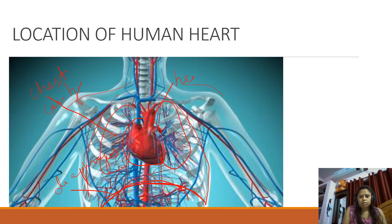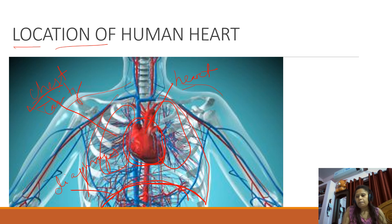In between these two lungs there is a muscular organ — that is your heart. The position of the human heart is in the chest cavity, in between the two lungs. It is exactly at the center of the chest cavity, and it is slightly tilted towards the left. Generally, if you ask anyone the location of the human heart, they will say it is on the left side — but actually it is in the center, just slightly tilted towards the left.